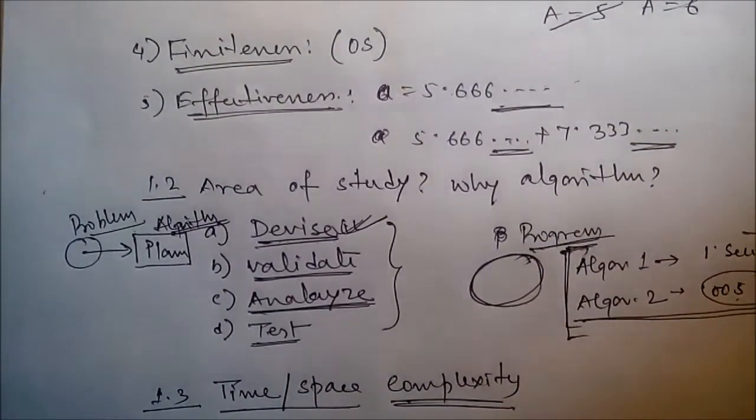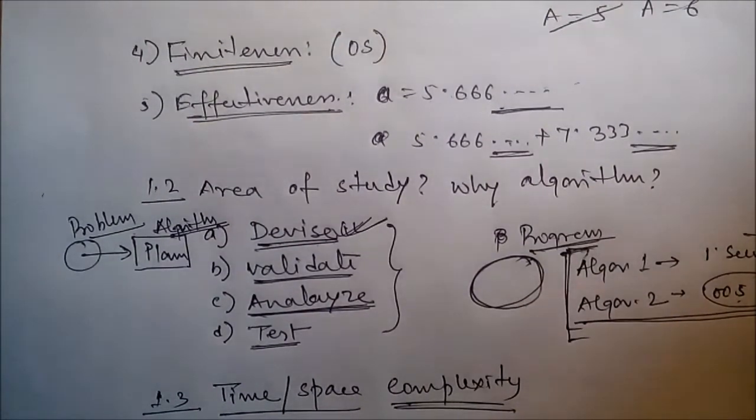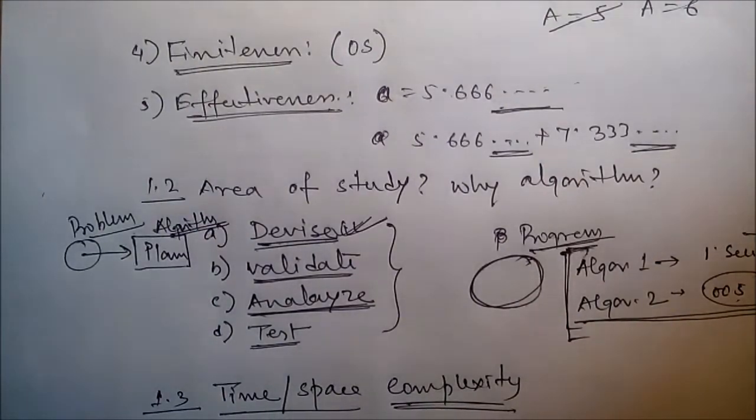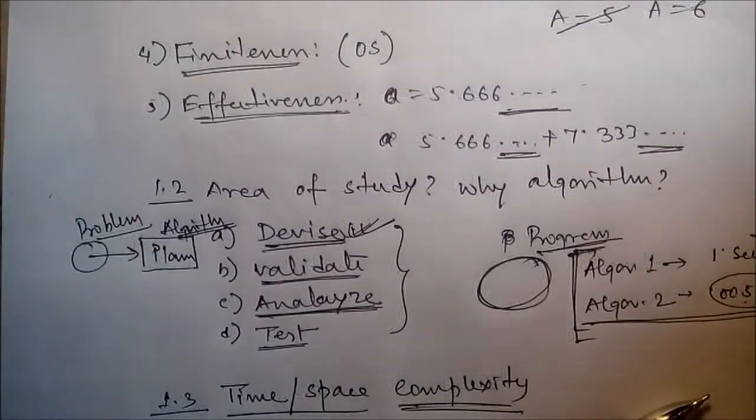Finally, testing. We have to test for different test cases. In testing we may use debugging or performance measurement profiling. What is debugging? Debugging is the process of executing a program on sample data sets to determine whether faulty results occur and if so, to correct them. If some set of inputs are there and we know the expected output, if we receive the same output then it's okay; if not, then there is a problem. Thank you.